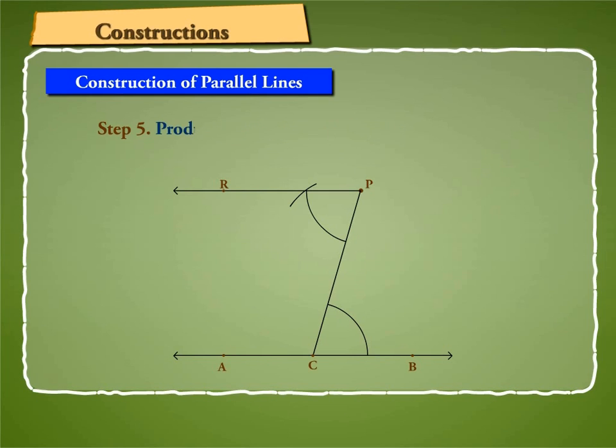Step 5. Produce RP to Q. Then RQ is the required line through P parallel to AB.